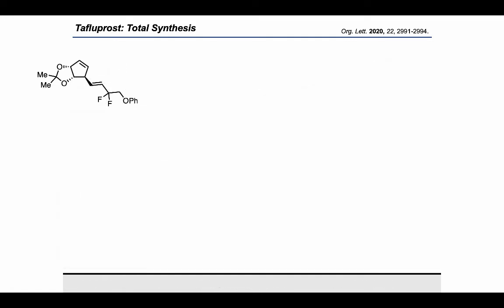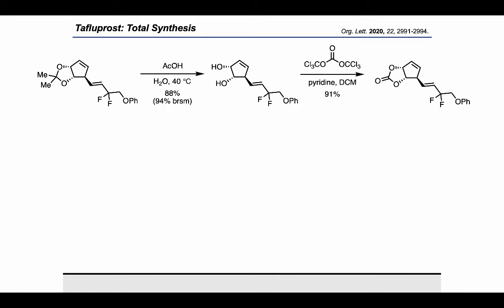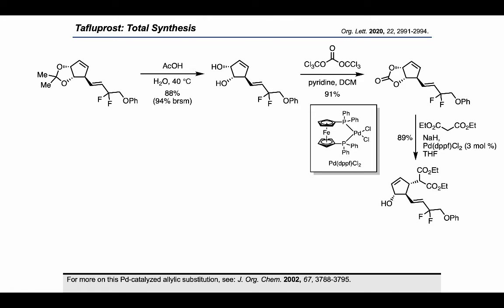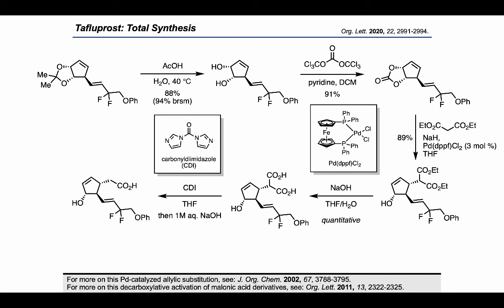Afterwards, they carried out some protecting group manipulations in order to be able to engage the alkene effectively. First, they treated with acetic acid and water at 40 degrees to remove the acetone ketal. Then they were able to form the cyclic carbonate using triphosgene and pyridine. Now they were ready to elaborate the cyclopentene. They treated with palladium-DPPF dichloride, which they used to generate a palladium-pi-allyl complex that could be attacked by a malonate nucleophile. Subsequent hydrolysis of the ethyl esters of the malonate resulted in the malonic acid, which could then be subjected to carbonyl diimidazole followed by sodium hydroxide, to allow a decarboxylative activation of the dicarboxylic acid, yielding the monoacid.